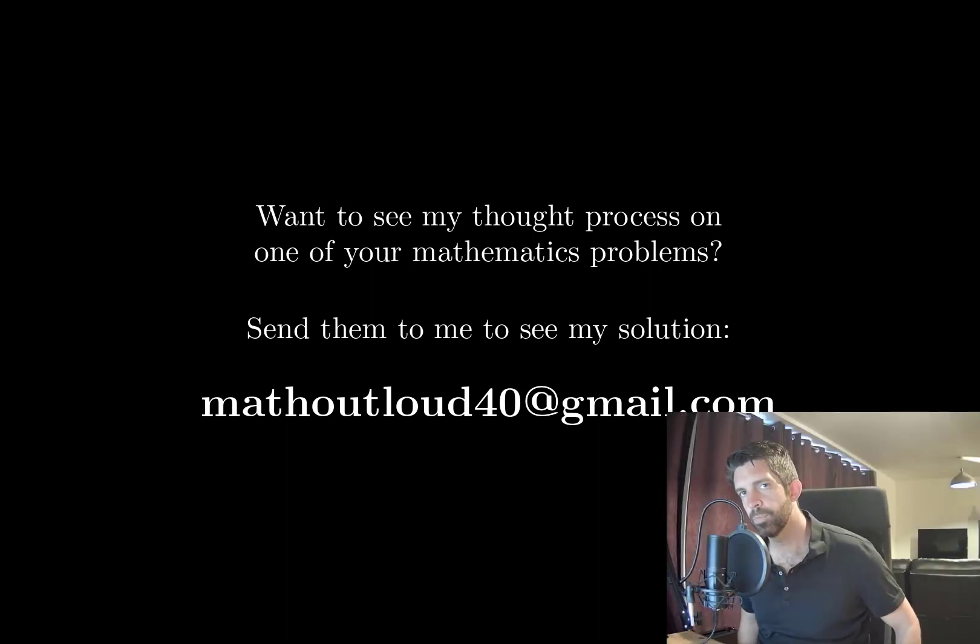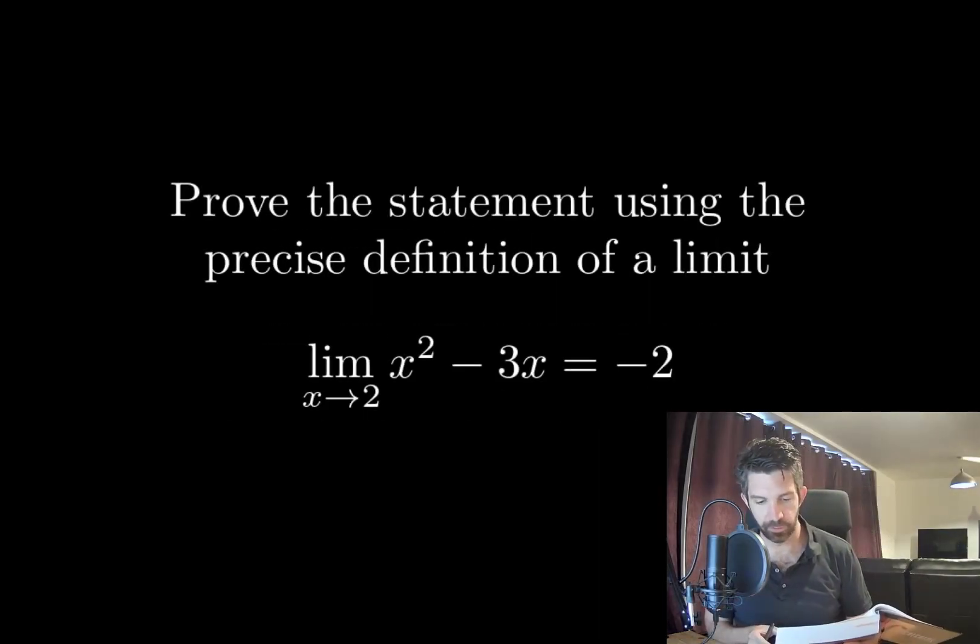Hello everyone, let's take a look at our next problem. Prove the statement using the precise definition of a limit. The limit as x approaches 2 of x squared minus 3x is equal to negative 2.